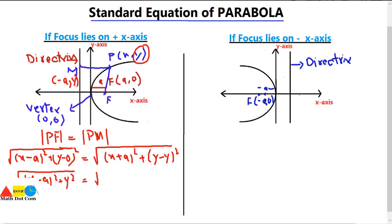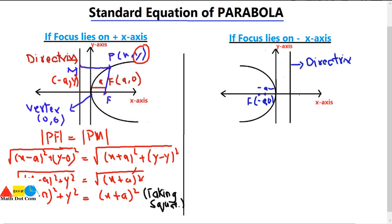Simplifying: the square root of (x minus A) squared plus y squared equals the square root of (x plus A) squared. Taking the square on both sides, the square roots cancel, and after expanding and simplifying we get y² = 4Ax. This is the standard equation of parabola when the vertex is (0, 0) and the focus lies on the positive x-axis.